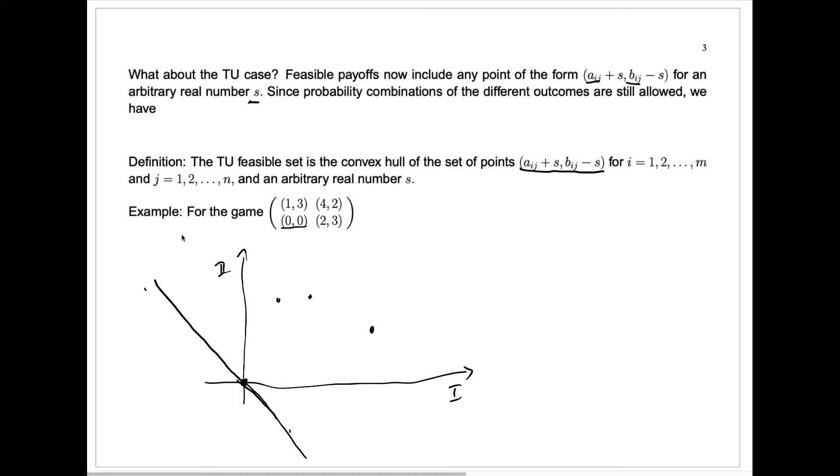So what we'll get when we look at these points, Aij plus S and Bij minus S, is what we get when we start with the point Aij, Bij, in this case, zero zero. And we allow, we vary S, that will look like all points along a line here, of slope negative one, going through the original point from the bi-matrix. And we'll have those for every one of our points.